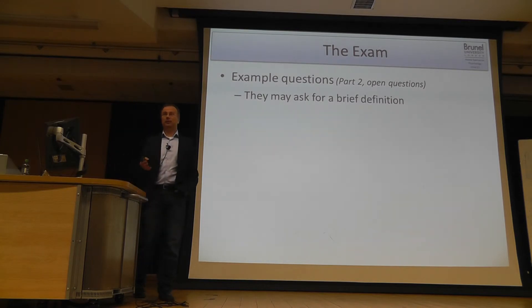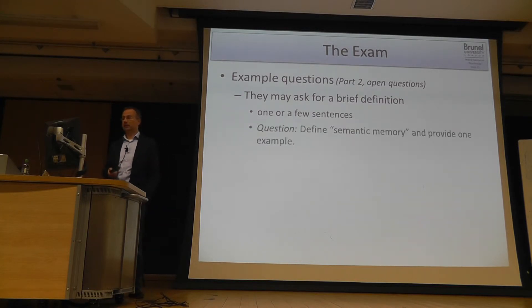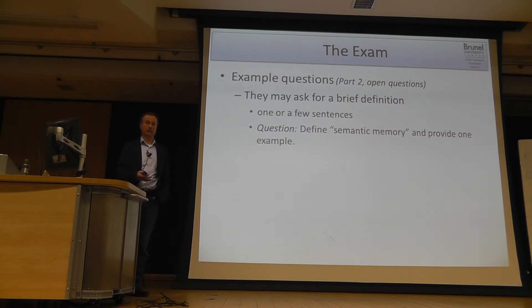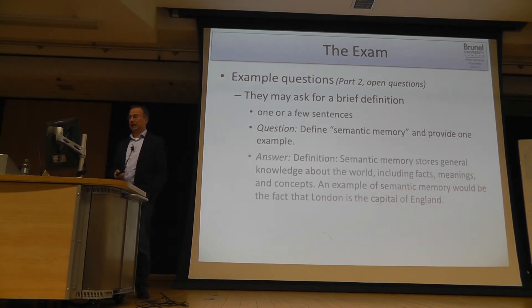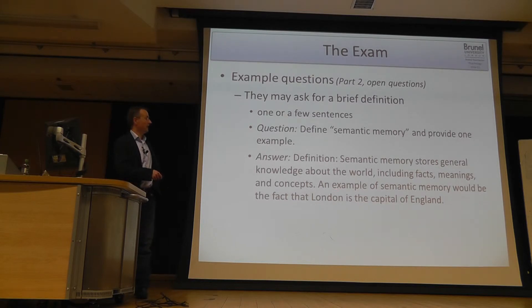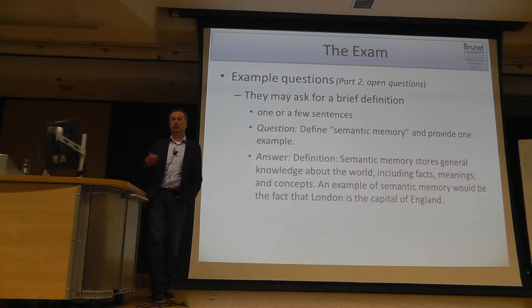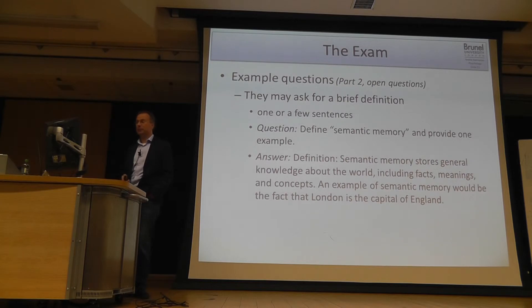It may be that you have to provide a brief definition and an example, so that you only need one or a few sentences. So, as an example: define semantic memory and provide one example. An example answer might be — as a definition: semantic memory stores general knowledge about the world, including facts, meanings, and concepts. And an example of semantic memory would be the fact that London is the capital of England.